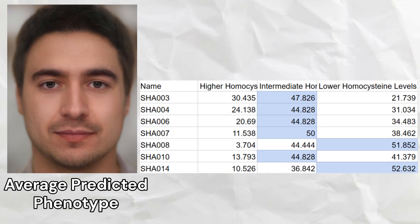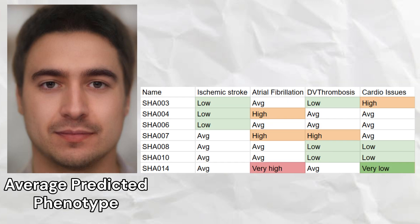The Shah Tepe samples had a high predisposition to lower homocysteine levels, with five samples scoring average and two samples scoring lower homocysteine levels, which is good. Three of the samples had low odds of ischemic stroke, three samples had high odds of atrial fibrillation, one sample had high odds of deep vein thrombosis, and one sample had high odds of generalized cardiovascular issues.